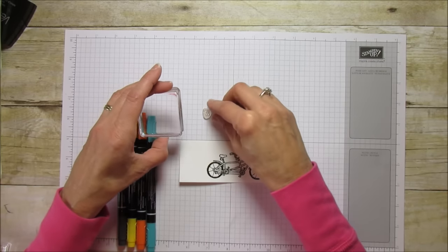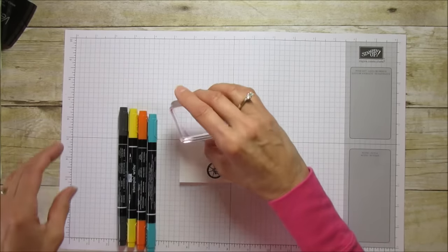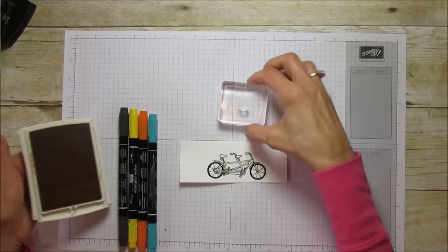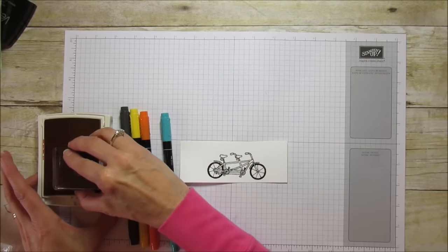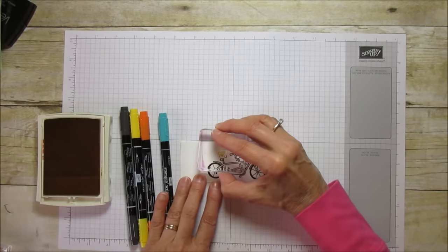He's really little and so cute. I'm going to use Crushed Curry and stamp him one on each seat.